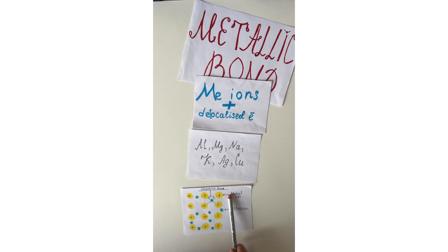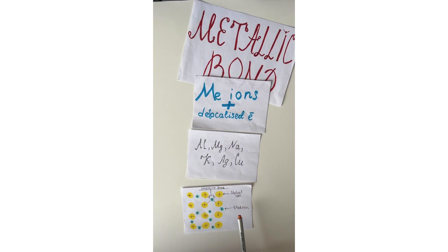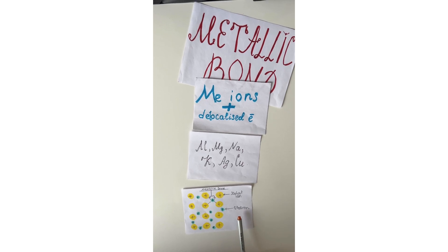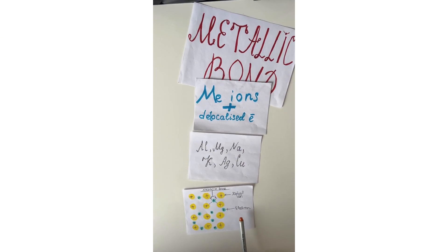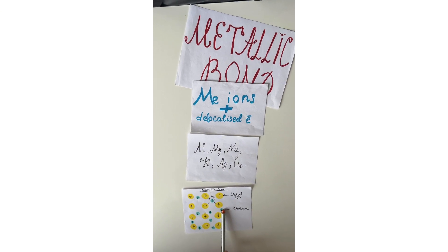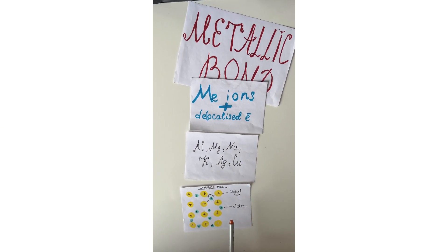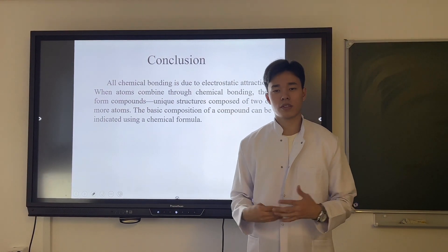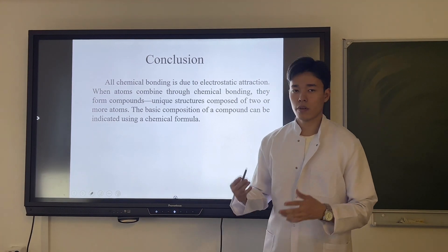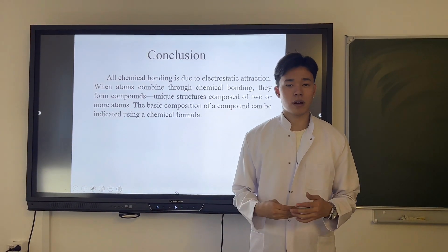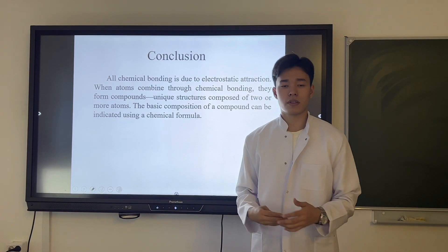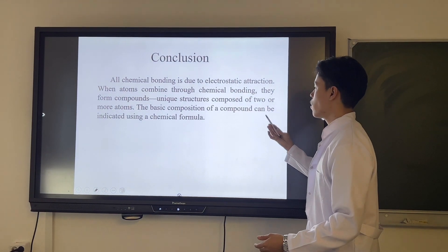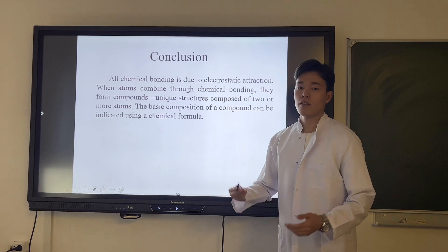A metallic bond is a chemical bond formed between positively charged atoms in which the free electrons are shared. All chemical bonding is due to electrostatic attraction. When atoms combine through chemical bonding, they form compounds — unique structures composed of two or more atoms. The basic composition of a compound can be indicated using a chemical formula.